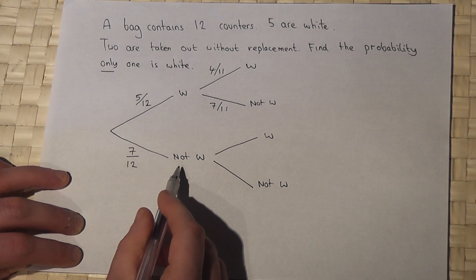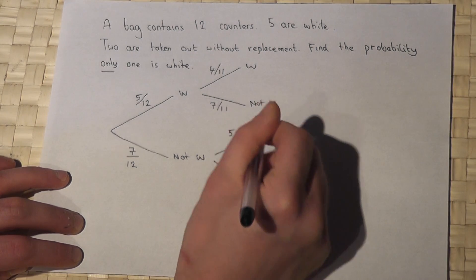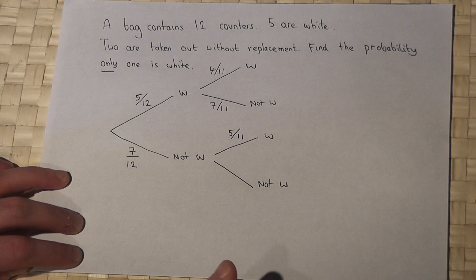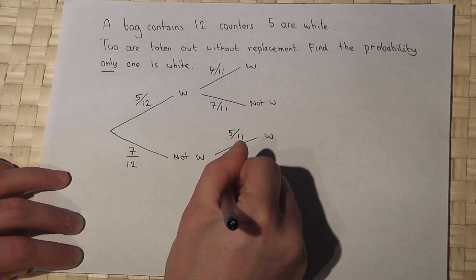However, if the first counter wasn't white, then when you go for your second counter there are still five whites in the bag, but again only 11 counters. Now there are only six not white left, so 6 out of 11.